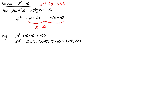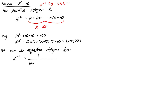We can do negative powers without much trouble either. We define 10 to the negative k to be 1 over 10 to the k. So for example, 10 to the negative 2 would be 1 divided by 10 squared, which is 1 over 100.